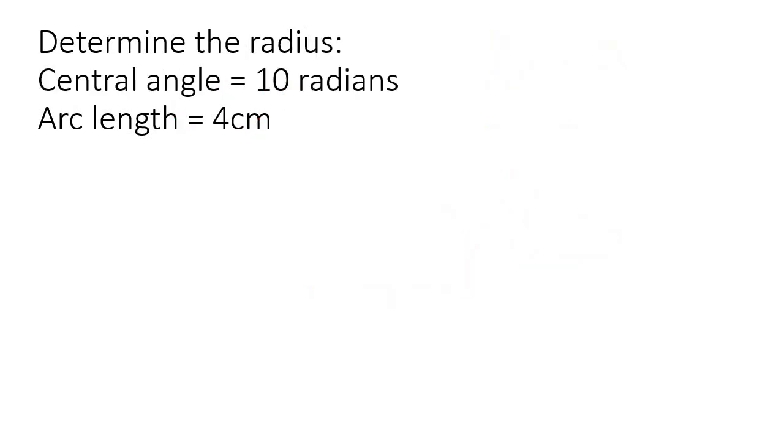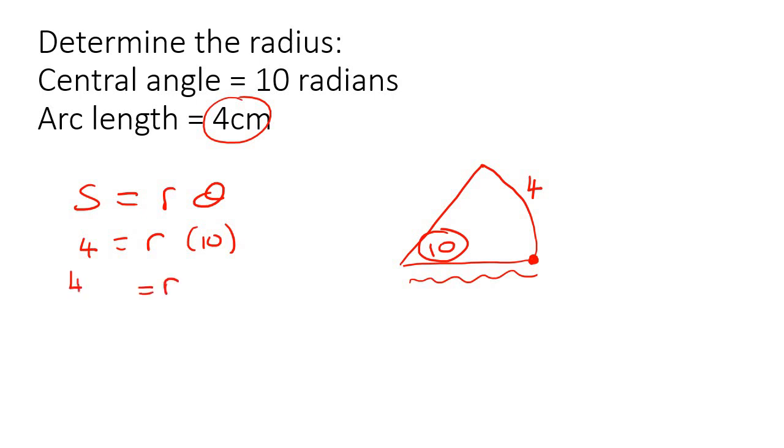So here they have—here they haven't given us the radius, so that's pretty awkward to try to draw, but they have given us the central angle. So they've given us the central angle as 10, and they've given us the arc length as 4. So they've gone 10 radiuses. So this radius is probably not very long, but anyways, let's just use the formula. S equals R theta. The arc length is 4. The radius, we don't know. The angle is 10. If you had to get R by itself, you would have to divide both sides by 10, and so you'd end up with 0.4 centimeters.